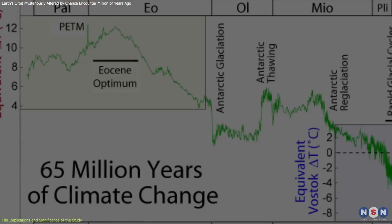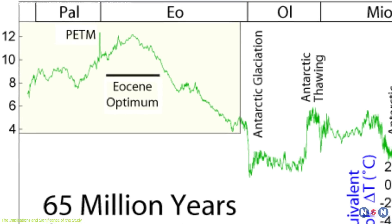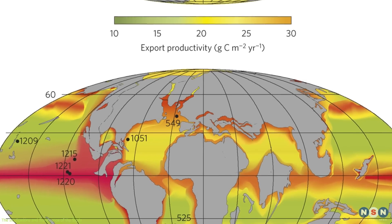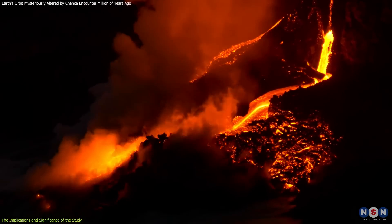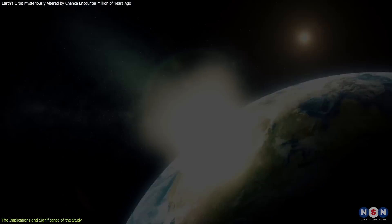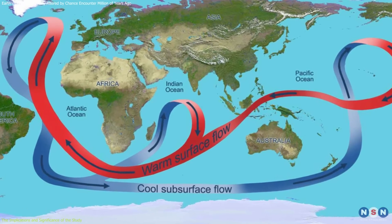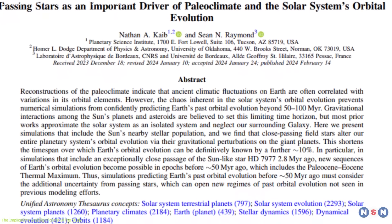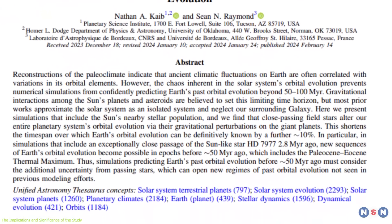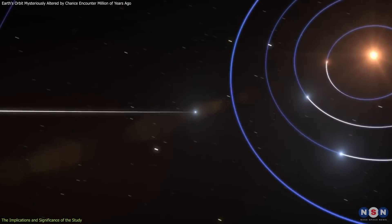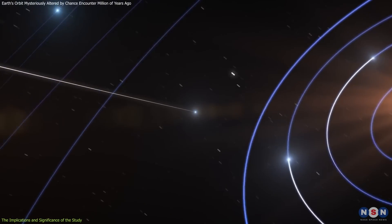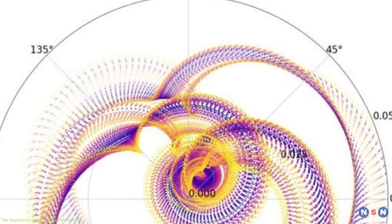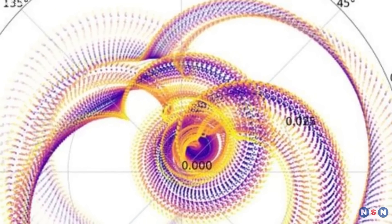However, this is not the only possible cause of the PETM, and there are other factors that could have contributed to the ancient warming event, such as volcanic activity, asteroid impacts, or changes in ocean circulation. The study does not rule out these other scenarios, but rather offers a new perspective that could complement them. It also does not claim that the passing star was the sole or direct cause of the PETM, but rather that it could have been a contributing factor that set the stage for the warming event.